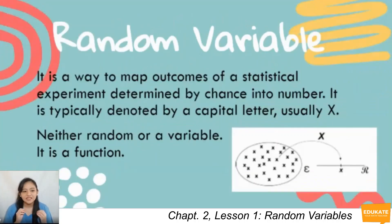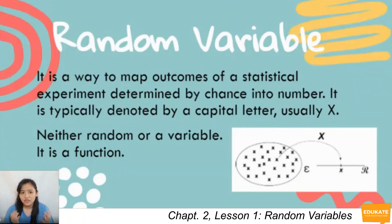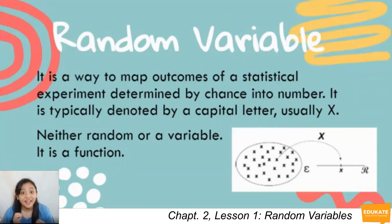A random variable is a way to map outcomes of a statistical experiment determined by chance into a number, usually denoted by a capital letter, usually X. It can also be any other capital letter, such as Y or A. Random variable is actually neither random nor a variable in the traditional sense of how we define variable in algebra class.